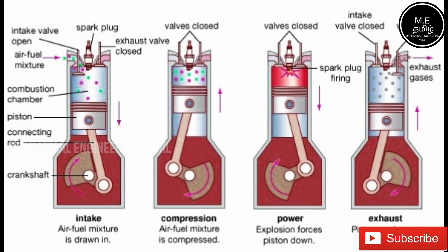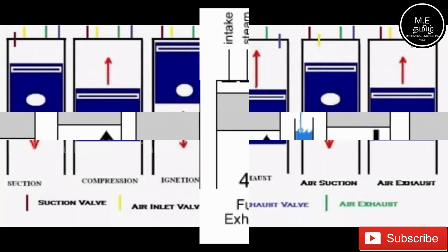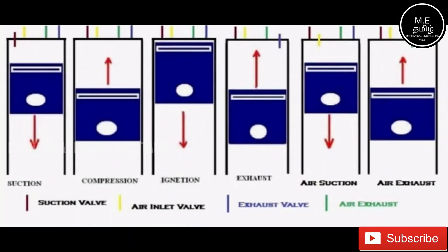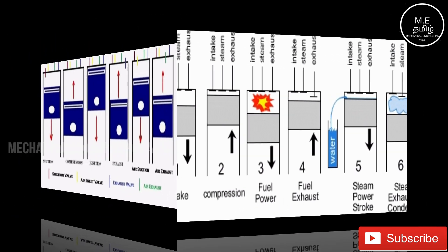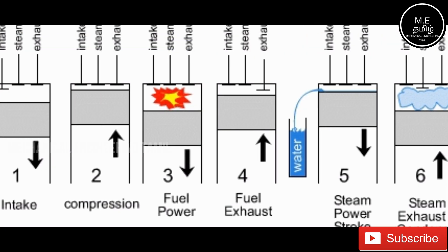This is the 4th stroke. After the 4th stroke, we have the 5th stroke — we call this the Anja Stroke, which is the steam power stroke. This is the 2nd power stroke. After the Anja Stroke, there is the exhaust stroke — we call this the 6th stroke, the 2nd exhaust stroke.